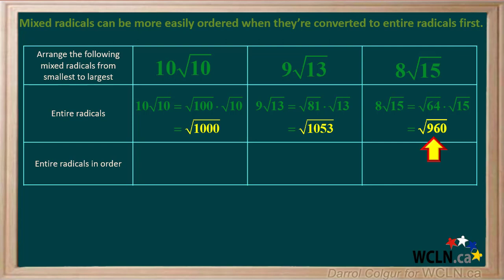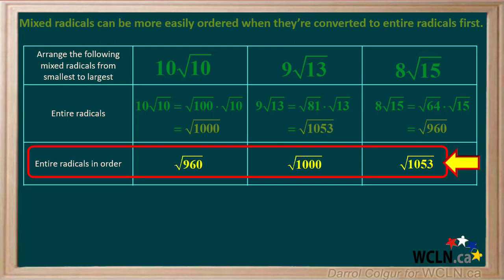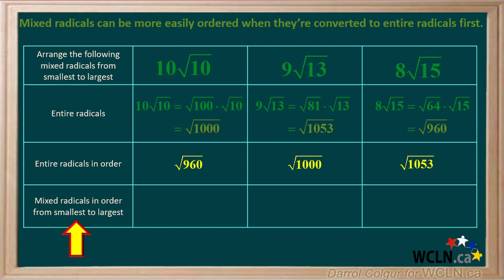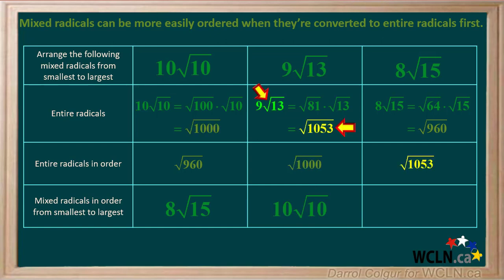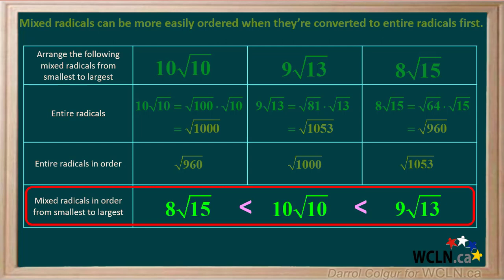The smallest is the square root of 960, so that goes into the first column. The next highest is the square root of 1000, so that goes into the second column. And the highest is the square root of 1053, so that goes into the last column. So now we have the entire radicals in order from smallest to largest. Our last step is to change these back to their original mixed radical form. The square root of 960 was 8 times the square root of 15. The square root of 1000 was 10 root 10. And the square root of 1053 was 9 root 13. So now we have the mixed radicals listed in order from smallest to largest value.